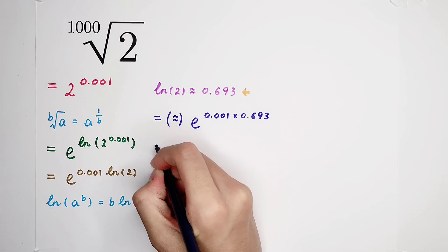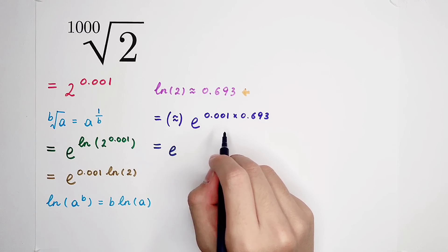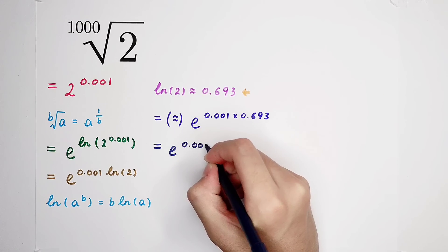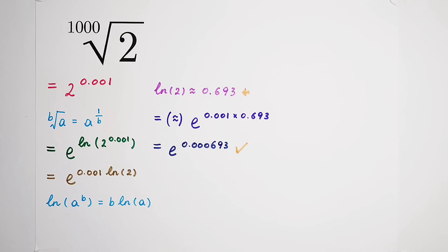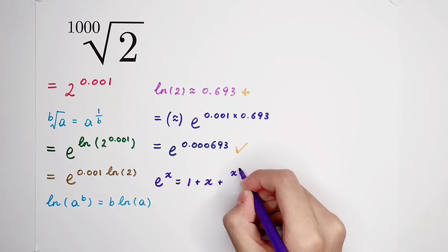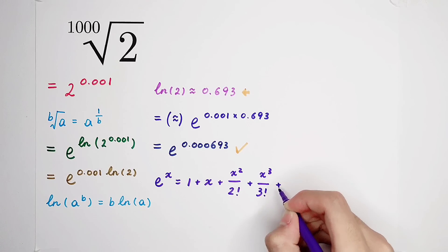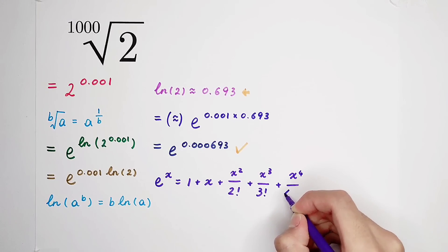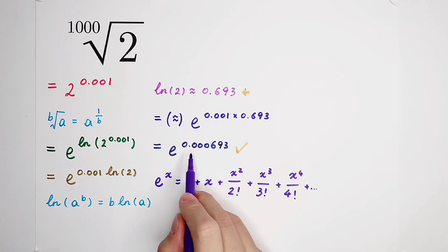It is e to the power of 0.001 times 0.693, so the exponent becomes 0.000693. Now we need to approximate this. I have a trick: Taylor expansion. The Taylor expansion of e to the power of x — what is x here? x is 0.000693.